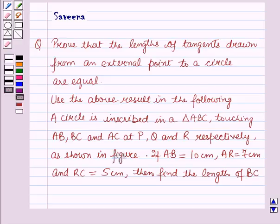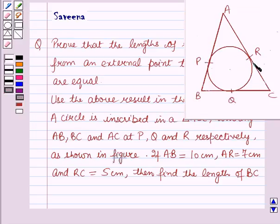Use the above result in the following: a circle is inscribed in a triangle ABC touching AB, BC and AC at P, Q and R respectively as shown in the figure. If AB is equal to 10 cm, AR is equal to 7 cm and RC is equal to 5 cm, then find the length of BC.